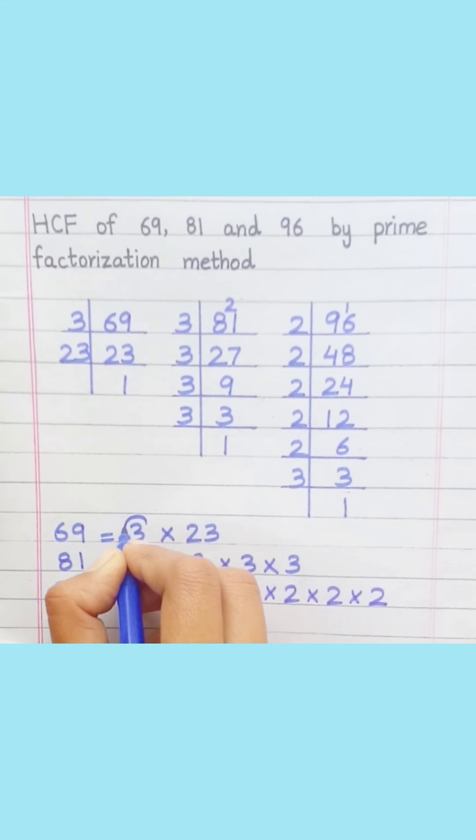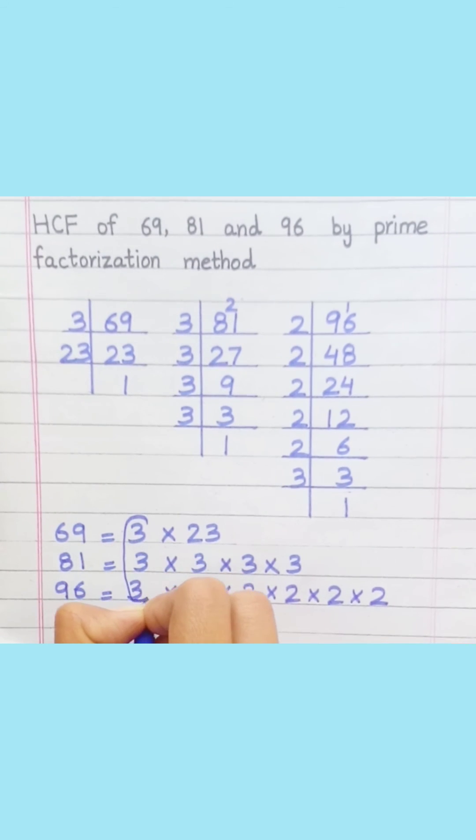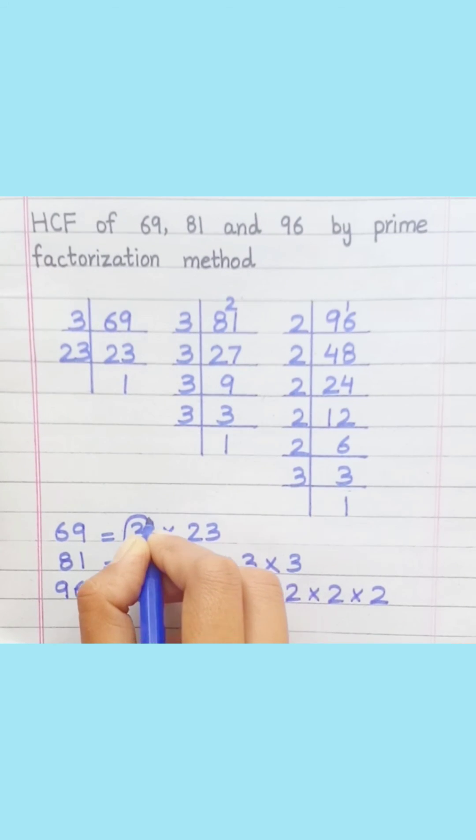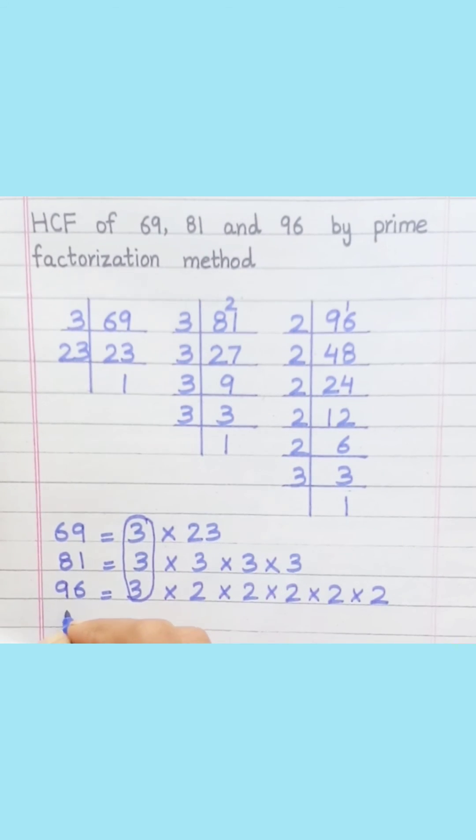Loop the factors that are common to all of the given numbers. HCF equals 3.